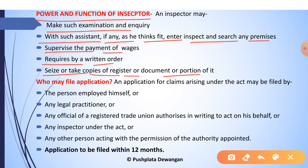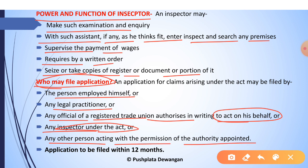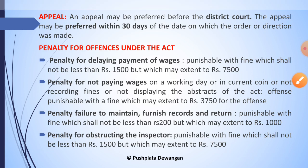An application for claims arising under this Act may be filed by the employed person himself, any legal practitioner, any official of a registered trade union authorized in writing to act on behalf of the employee, any inspector under this Act, or any person acting with the permission of the appointed authority. Every application for a claim under this Act shall be presented within 12 months from the date on which the deduction from wages was made, or from the date on which payment of wages was due.